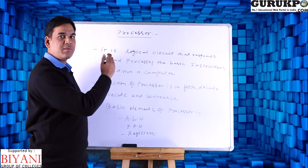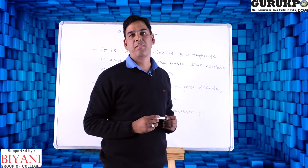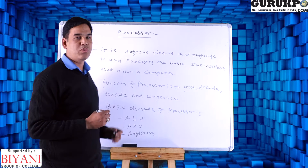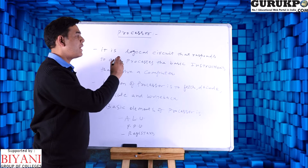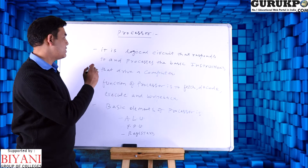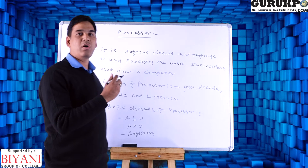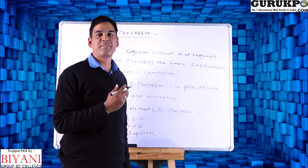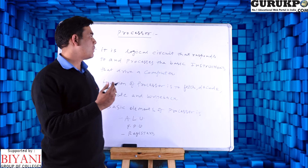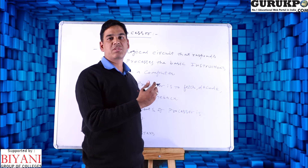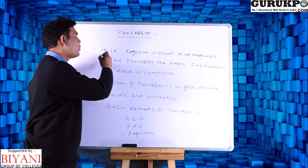First of all, we should know what a processor is. Basically, processor and CPU have a basic difference — a processor is a chip which we use in a CPU. So, a processor is basically a logical circuit that responds to and processes the basic instructions that drive a particular computer. If we want to give some type of instruction to the processor, then we use some specific kind of digital circuit.